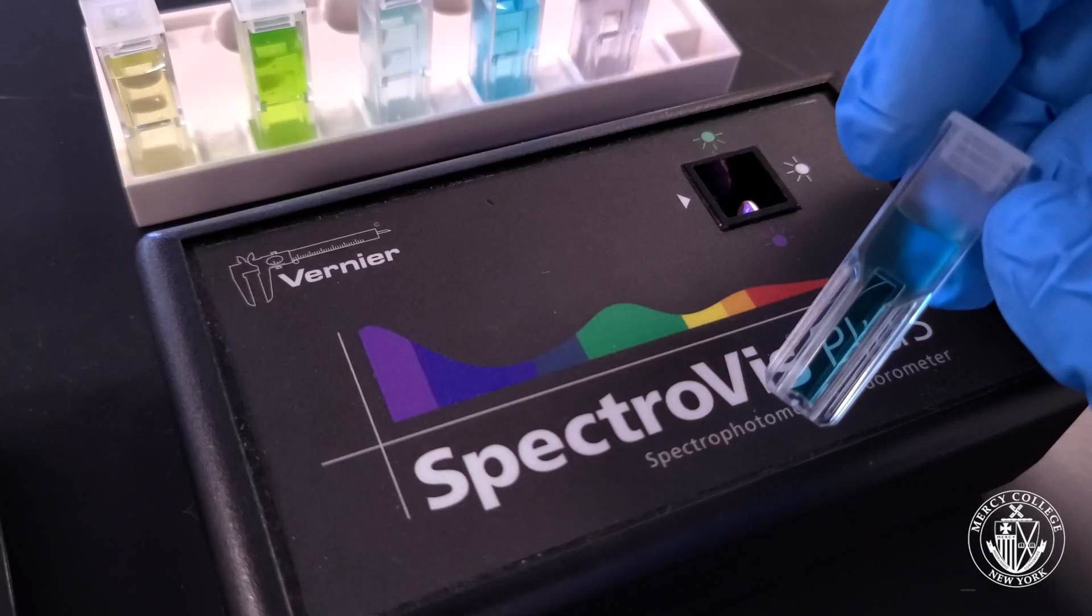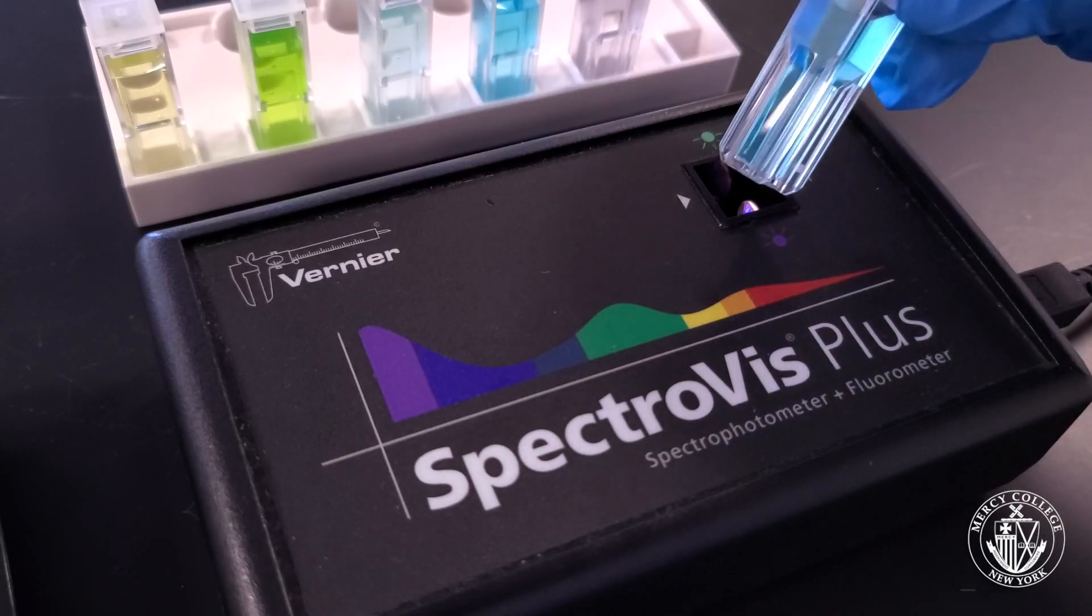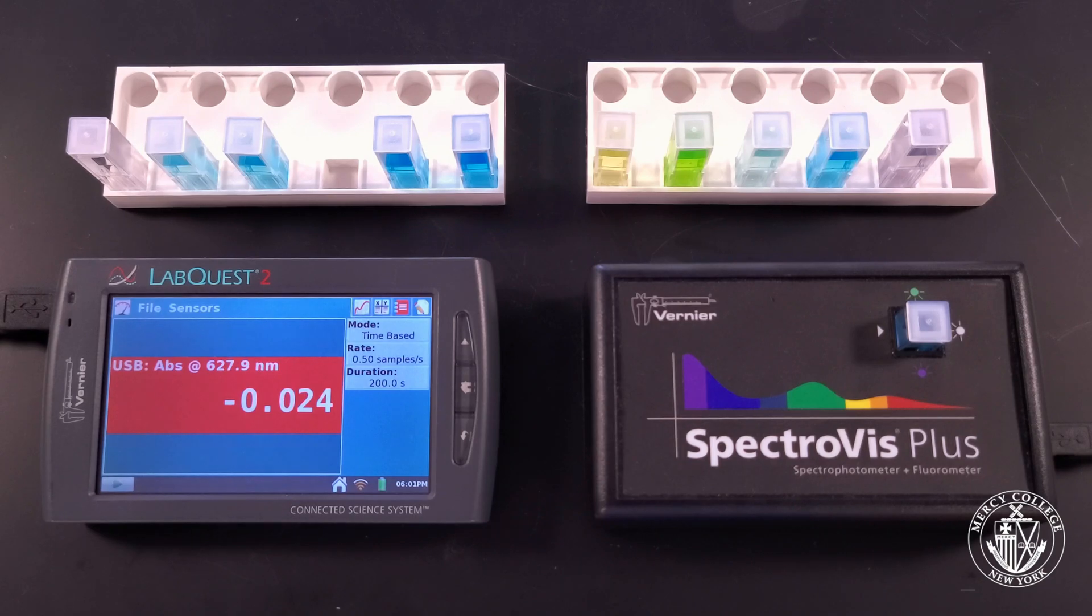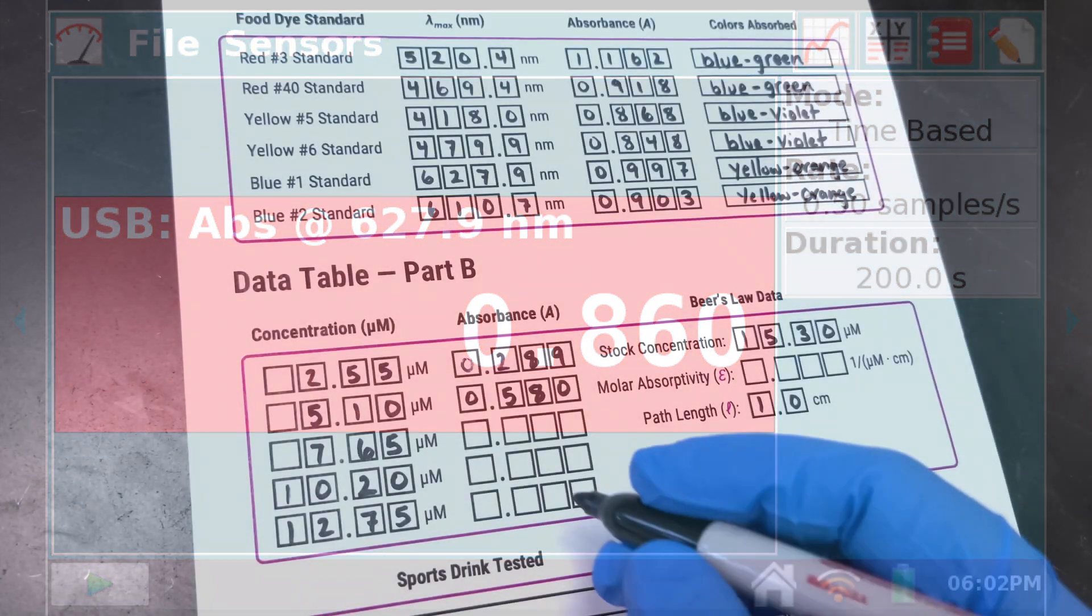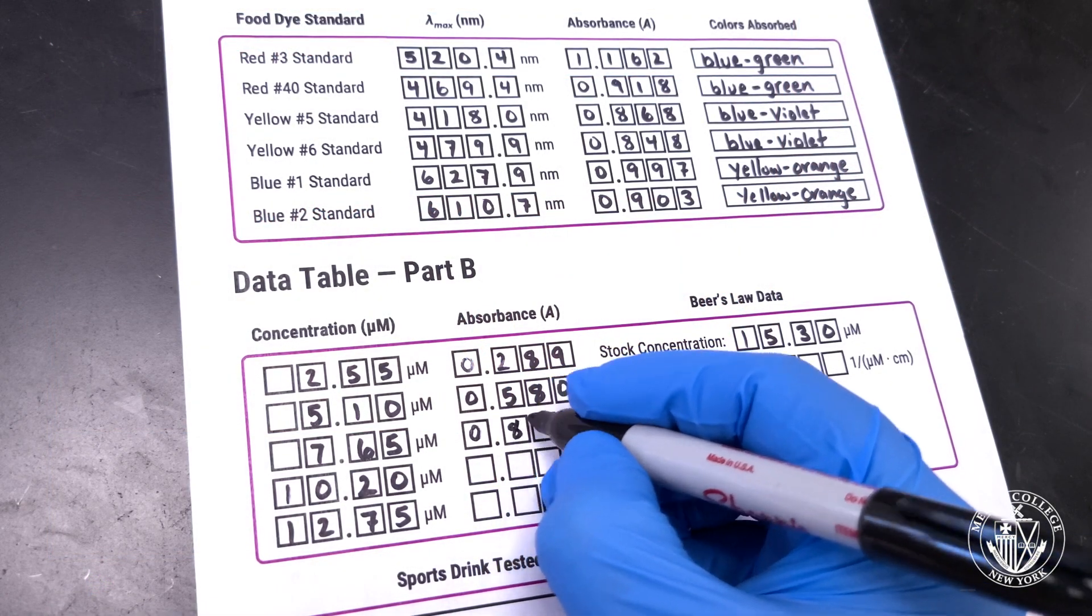Repeat the same process for your third dye standard, making sure that you let the absorbance stabilize before recording it on your datasheet. This dye standard looks like it has an absorbance of 0.860.